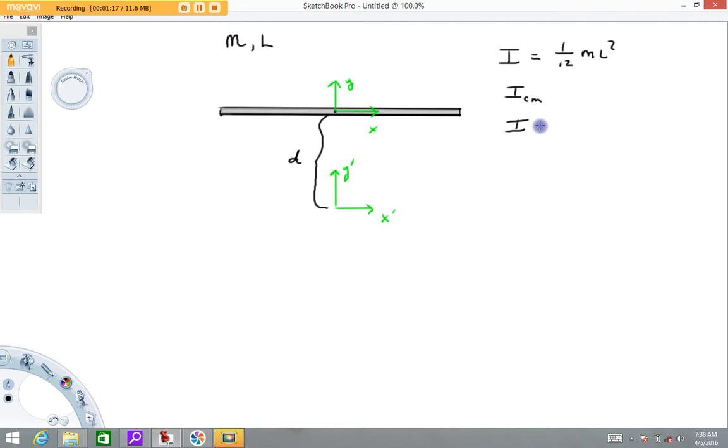then that moment of inertia is equal to the moment of inertia about the center of mass plus md squared, where d is the distance from the center of mass to the axis of rotation.